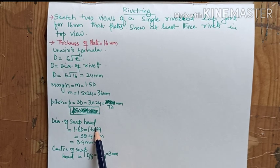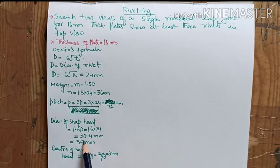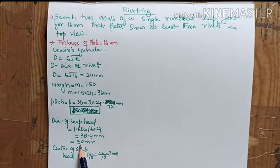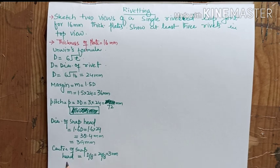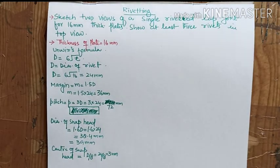The snap head is 1.6D, so substituting we get a rounded figure that is 39mm. And center of the snap head is D by 8 and it comes out 3mm. So we have to draw its two views.